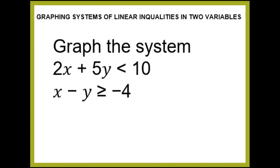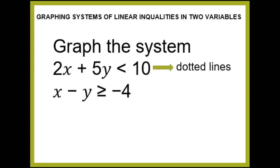Another example: graph the system 2x + 5y < 10 and x − y ≥ −4. Let's determine the type of line to draw. For the first inequality, we have a less than symbol, so the line is a dotted line. For the second inequality, we have a greater than or equal to symbol, so the line is a solid line.